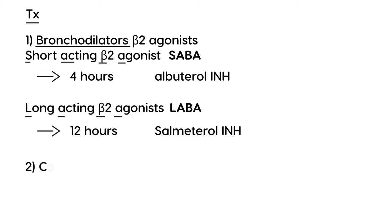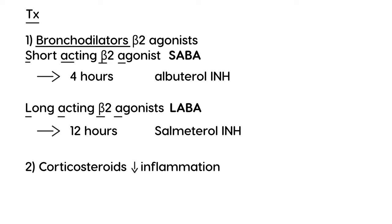Corticosteroids are used in asthma treatment because they decrease inflammation — one of the two big components of asthma. The most common inhaled steroid is fluticasone, given as an inhaler. For oral steroids, prednisone is often used.